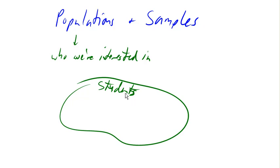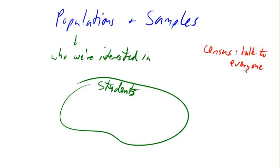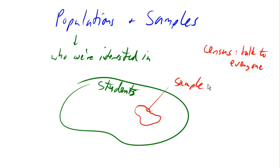Usually, if we are doing an experiment or a poll, we really can't afford to talk to everyone. If we could, then we would be doing a census — that's where we talk to everyone. You've probably heard of the census because the U.S. does one every ten years to figure out how many people there are by talking to everyone. Obviously, that's really expensive, so very rarely do we do this. Usually, we talk to a small group of the population, and that's called the sample.